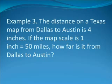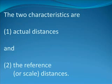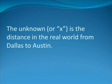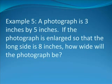Example number three. The distance on a Texas map from Dallas to Austin is 4 inches. If the map scale is 1 inch equals 50 miles, how far is it from Dallas to Austin? The two things being compared are the real world and a map. The two characteristics are actual distances and the reference or scale distance. The unknown is the distance in the real world from Dallas to Austin. This is how the tic-tac-toe board should be filled out.